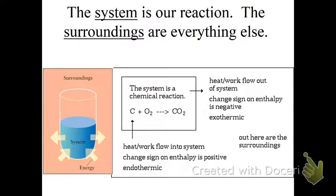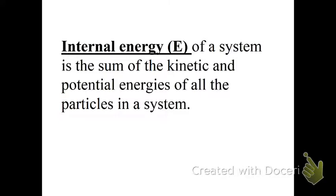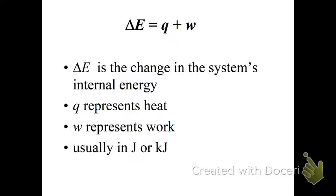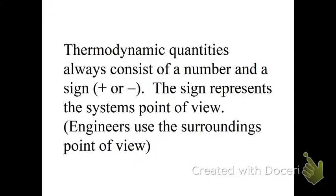The system is our reaction. Everything else is the surroundings. So when we're doing our lab, if we're doing calorimetry, our system's inside the cup. Our surrounding is outside the cup. Internal energy of a system is the sum of the kinetic and potential energies of all the particles in the system. There we have delta E is equal to Q plus W. Delta E is the change in internal energy. Q is heat. And W is work. And it's usually going to be in joules or kilojoules.